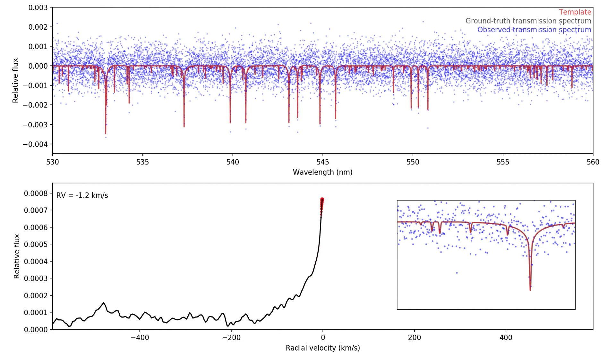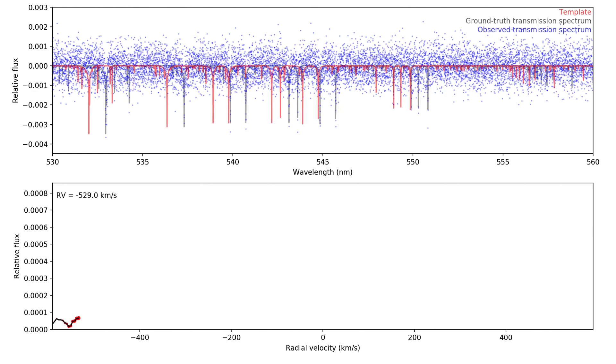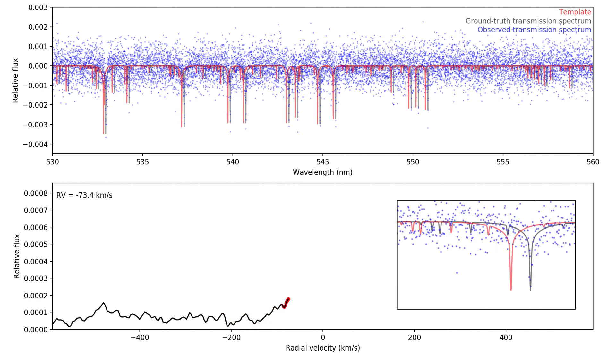The real observed transmission spectrum in this case is continuum subtracted. That's why the cross-correlation function is nearly zero when the template is shifted away from the rest frame velocity of the planet. Often the data is first continuum subtracted using some form of averaging filter, in which case the average of the cross-correlation function will indeed approach zero.